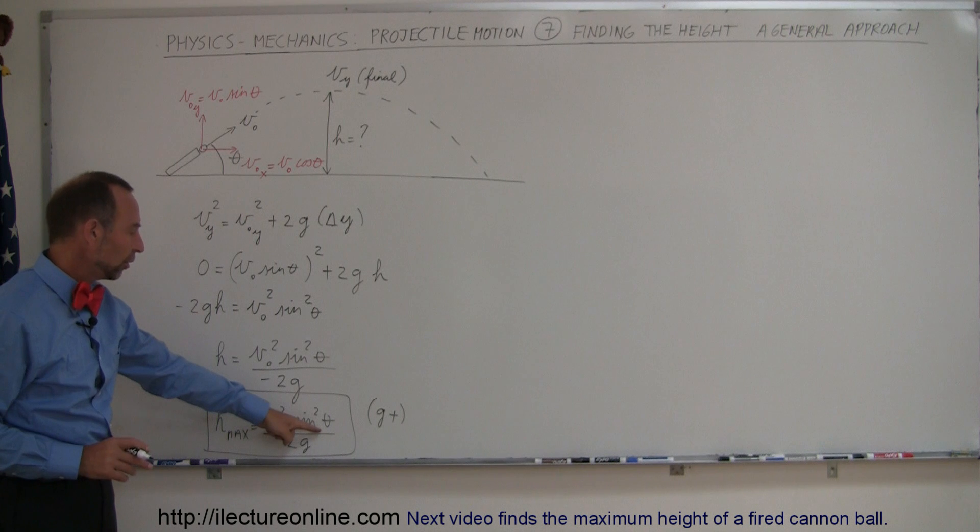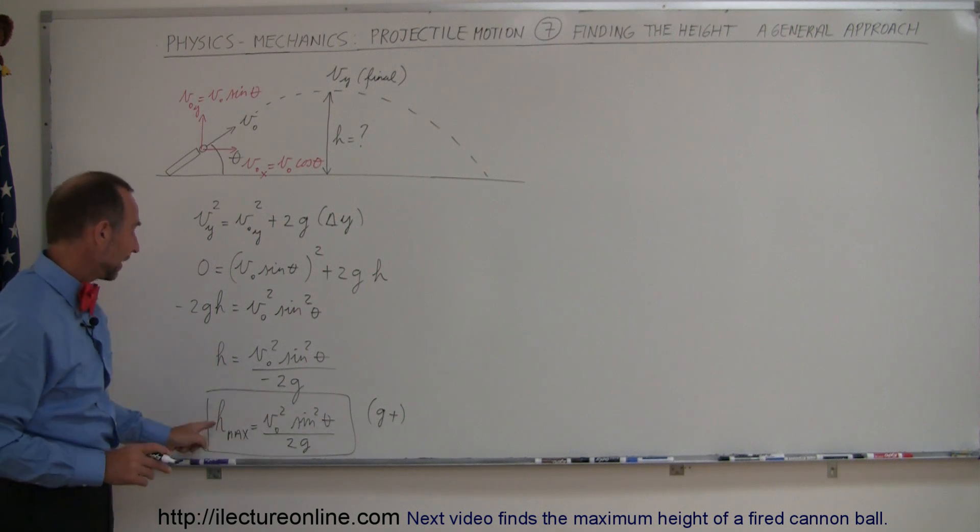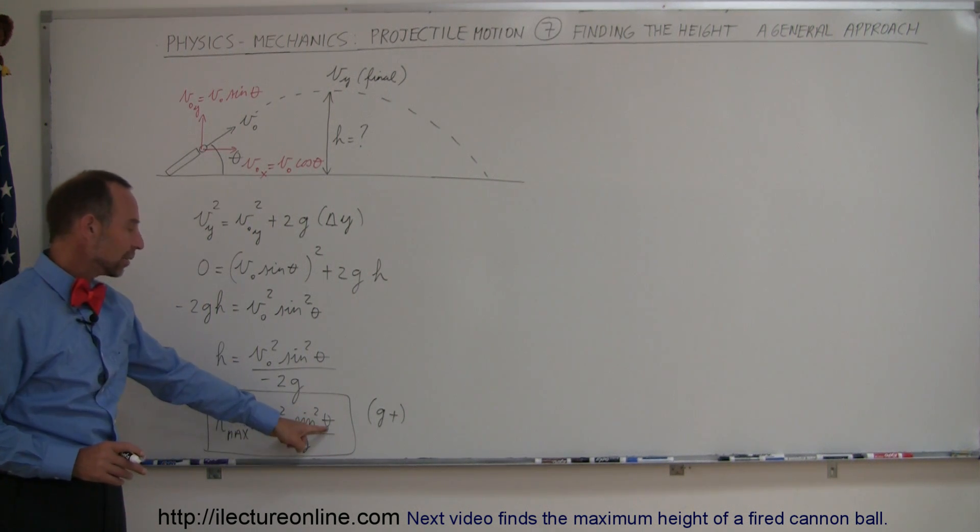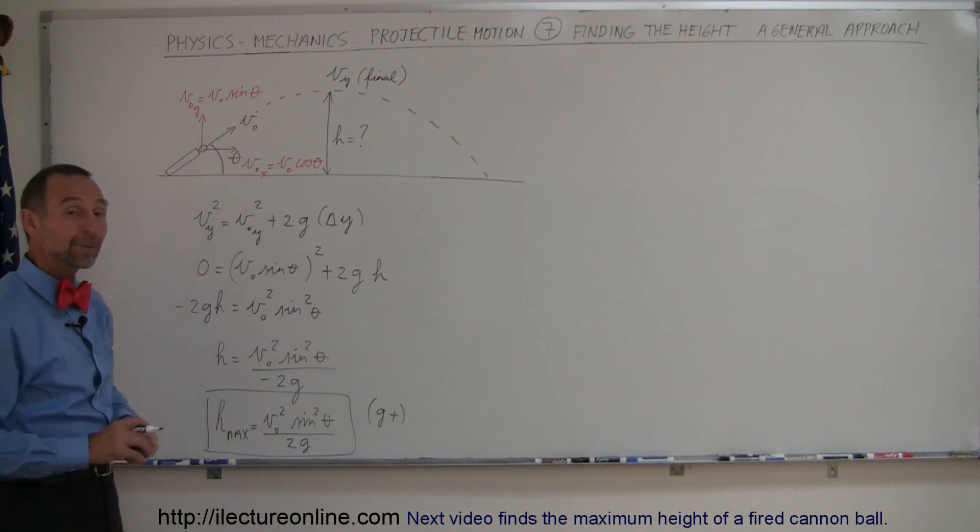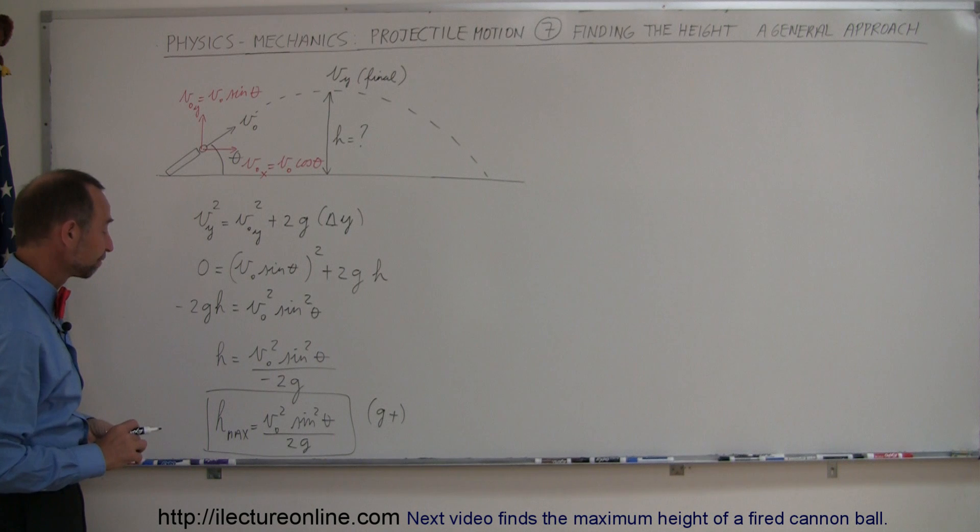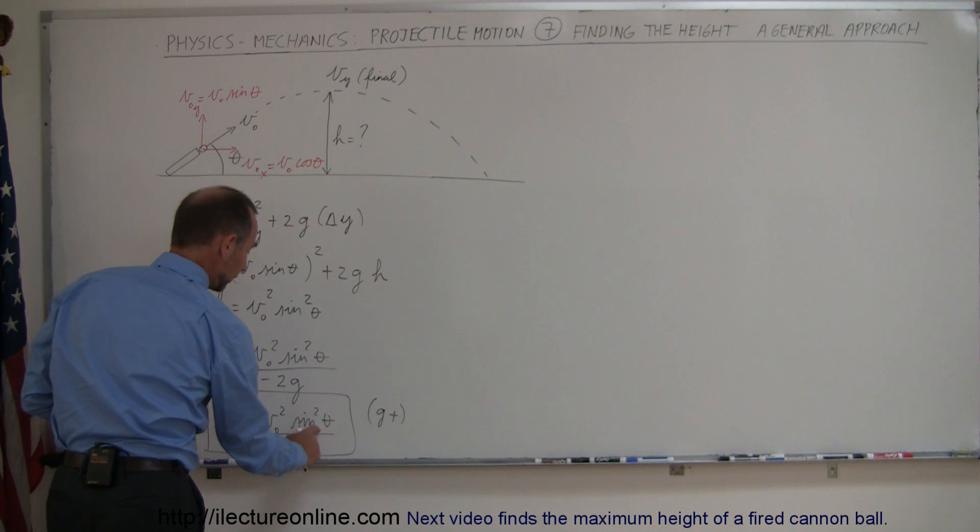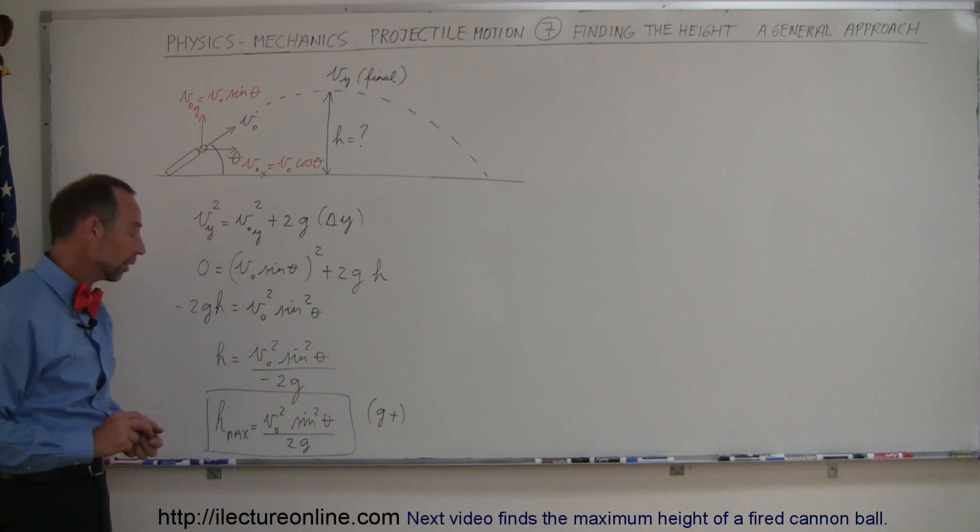But this can change depending upon what angle I use. Now, of course, if I use a zero angle, sine of zero is zero, I get zero height. If I give it a 90 degree angle, straight up, and of course, that would be the maximum height, wouldn't it? So it looks like we can gain the maximum height by making theta the largest value.